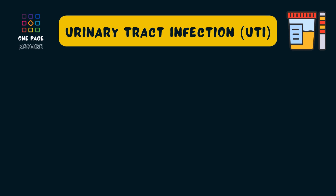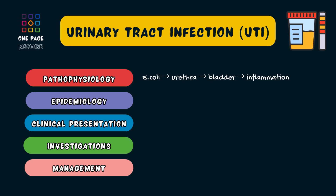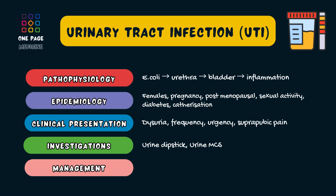In summary, urinary tract infections can occur anywhere along the urinary tract. Lower UTIs often involve the bladder, known as acute cystitis. They occur when bacteria such as E. coli ascend the urethra and trigger inflammation of the urinary tract. UTIs are common, especially in women. Other risk factors include pregnancy, post-menopausal status, sexual activity, diabetes, and catheterisation. Typical symptoms include dysuria, urinary frequency, urgency, suprapubic pain, and sometimes haematuria. Diagnosis involves a urine dipstick and urine microscopy, culture, and sensitivities to confirm the infection and guide antibiotic therapy. Treatment includes oral antibiotics such as nitrofurantoin or trimethoprim, along with hydration and symptom control.